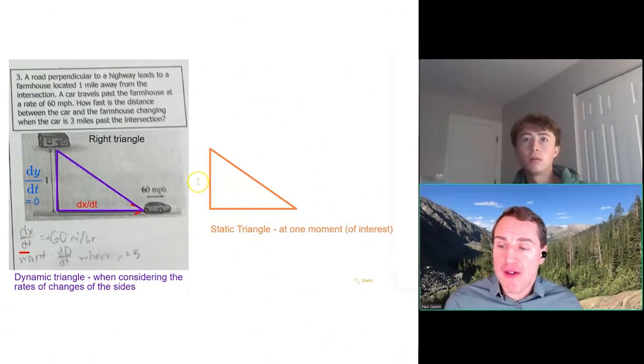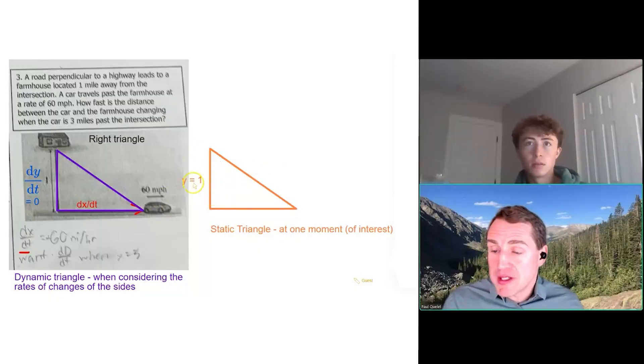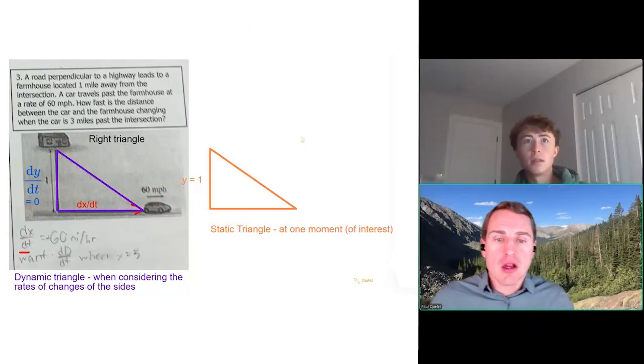Now, by the way, do we know the value of y at the moment of interest? It's what? One. Because we're exactly one mile from the farmhouse in the vertical direction. Does that make sense? Yeah.